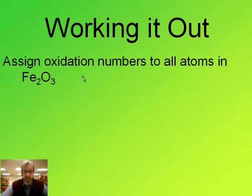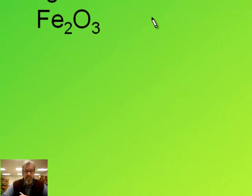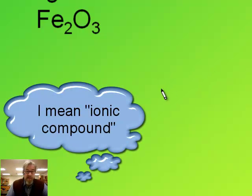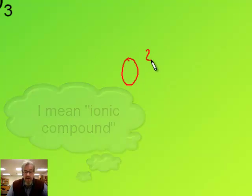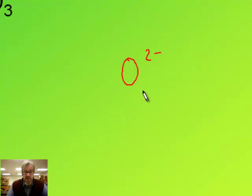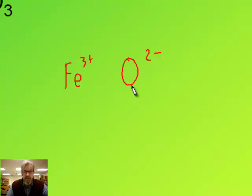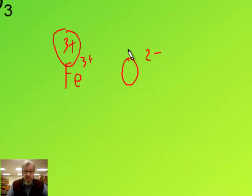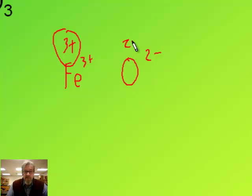Fe2O3. This is an ionic compound, so I'll split metal versus nonmetal. The anion is oxygen with a two minus charge, and the cation is Fe three plus — we can figure that out by reversing the charge swap like we did before. These are both monatomic ions, so the oxidation number for iron is three plus and the oxidation number for oxygen is two minus.